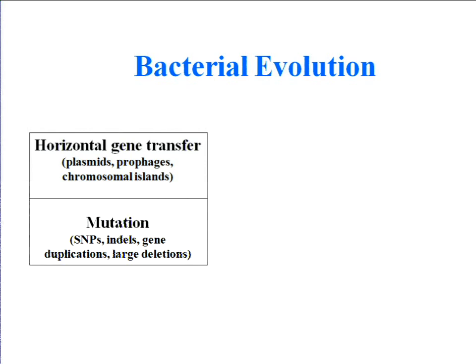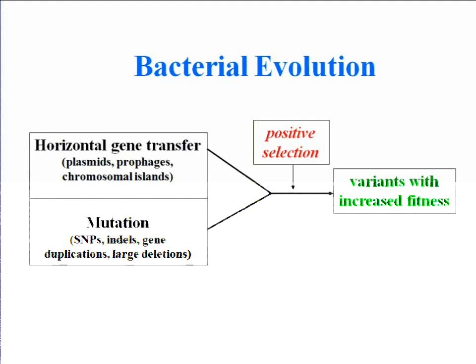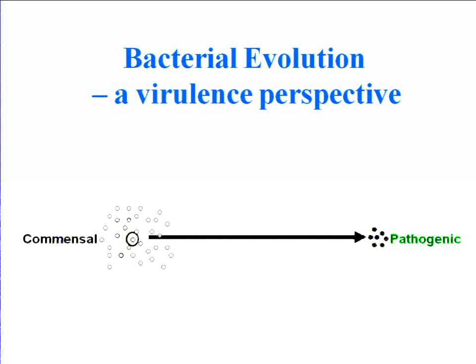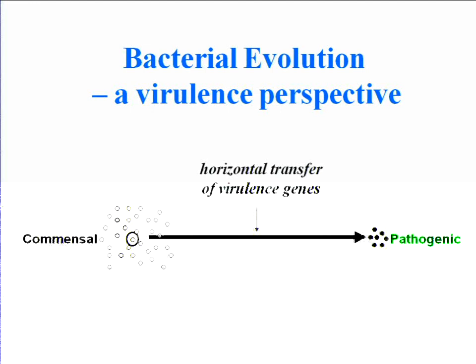When these act under some positive selection pressure, new variants with increased fitness emerge in the population. As we see bacterial evolution from a virulence perspective, sometimes in a commensal population a few individuals get transformed to pathogenic forms, either through horizontal transfer of virulence genes as part of large chunks of DNA — also termed pathogenicity-associated islands — or through the accumulation of adaptive mutations that lead to pathogenicity.